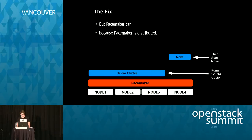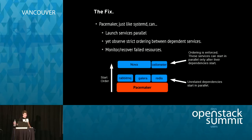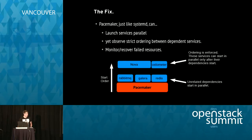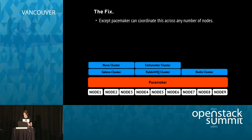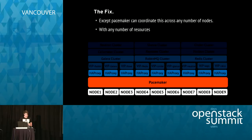Pacemaker can coordinate distributed services. This is what Pacemaker was designed to do. With Pacemaker, we can say start the Galera cluster across three nodes, form that cluster, and once it's available, then start Nova. If we go back and look at what a PID 1 does, Pacemaker does all those things: launch services in parallel while observing strict ordering, and monitor and recover failed resources. But unlike Systemd, Pacemaker can do this across any number of nodes with any number of resources.